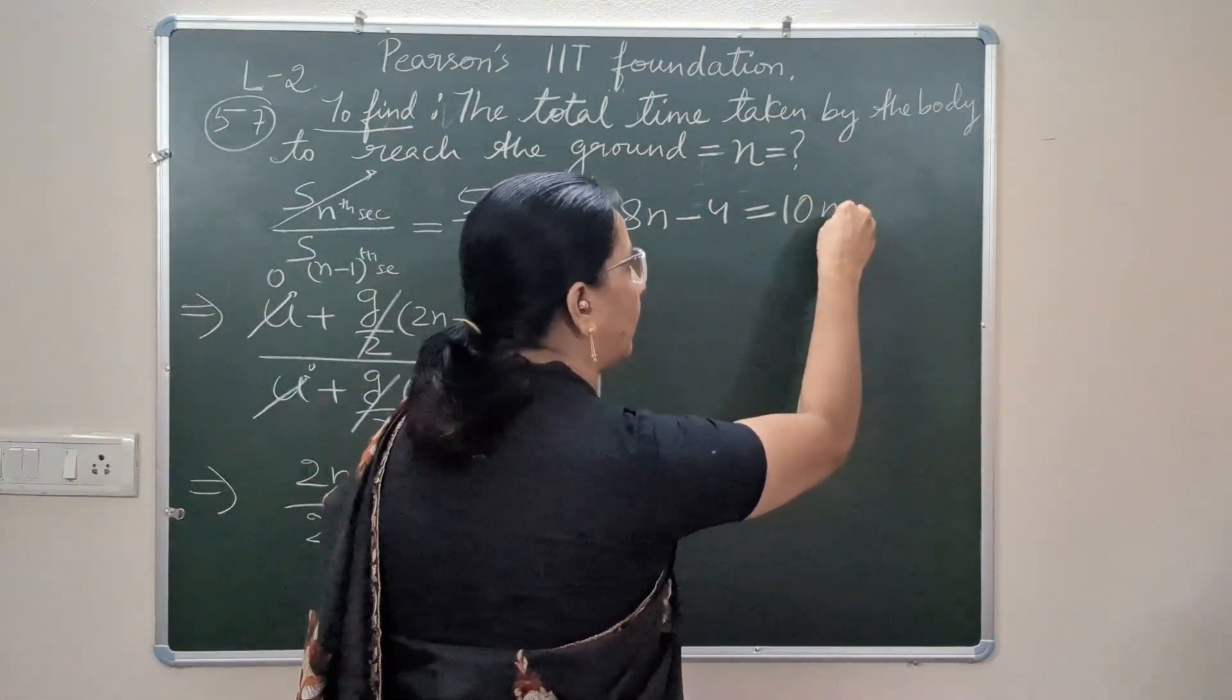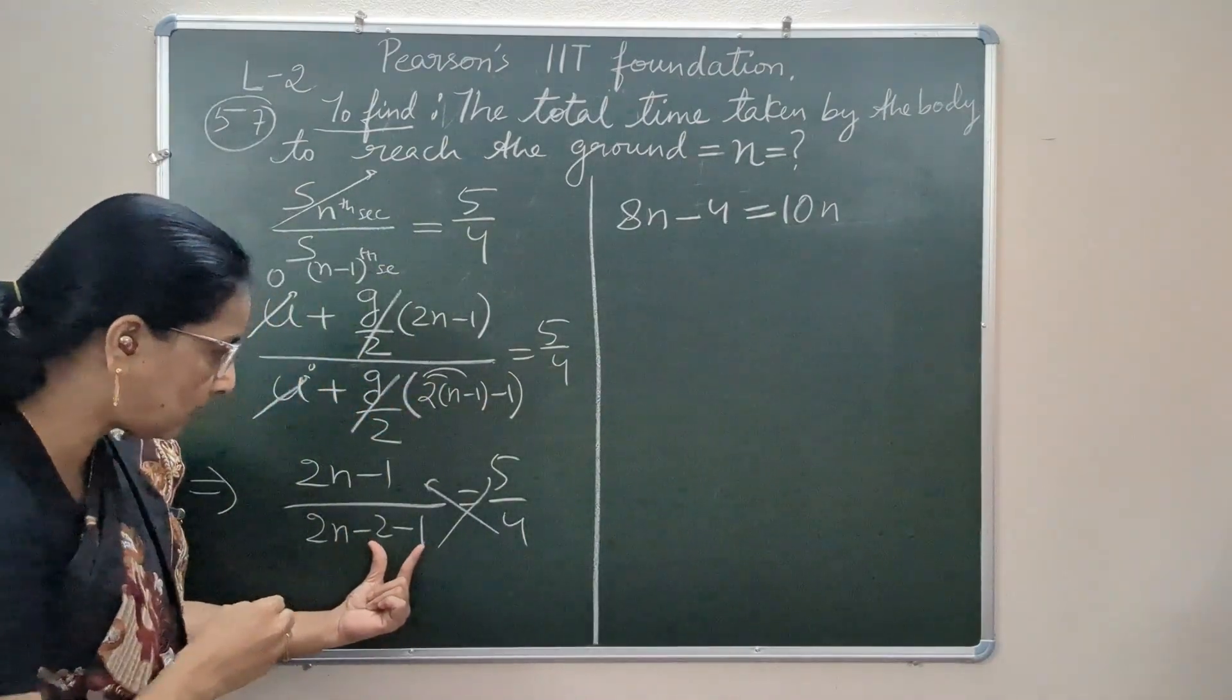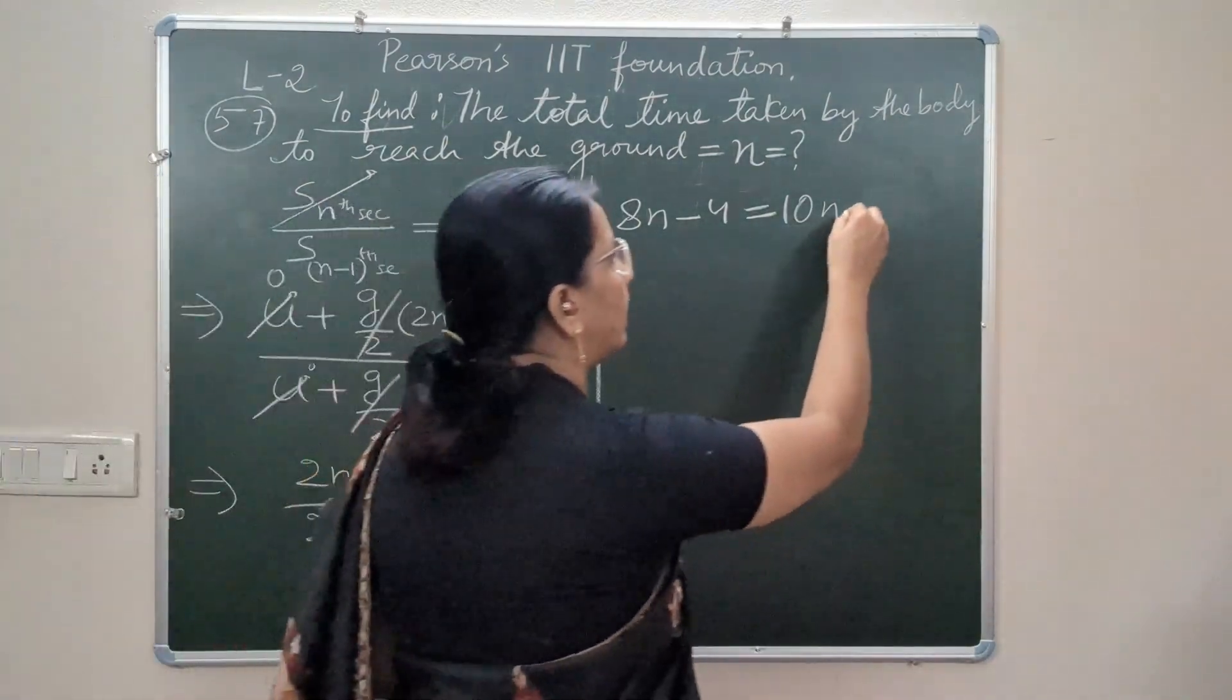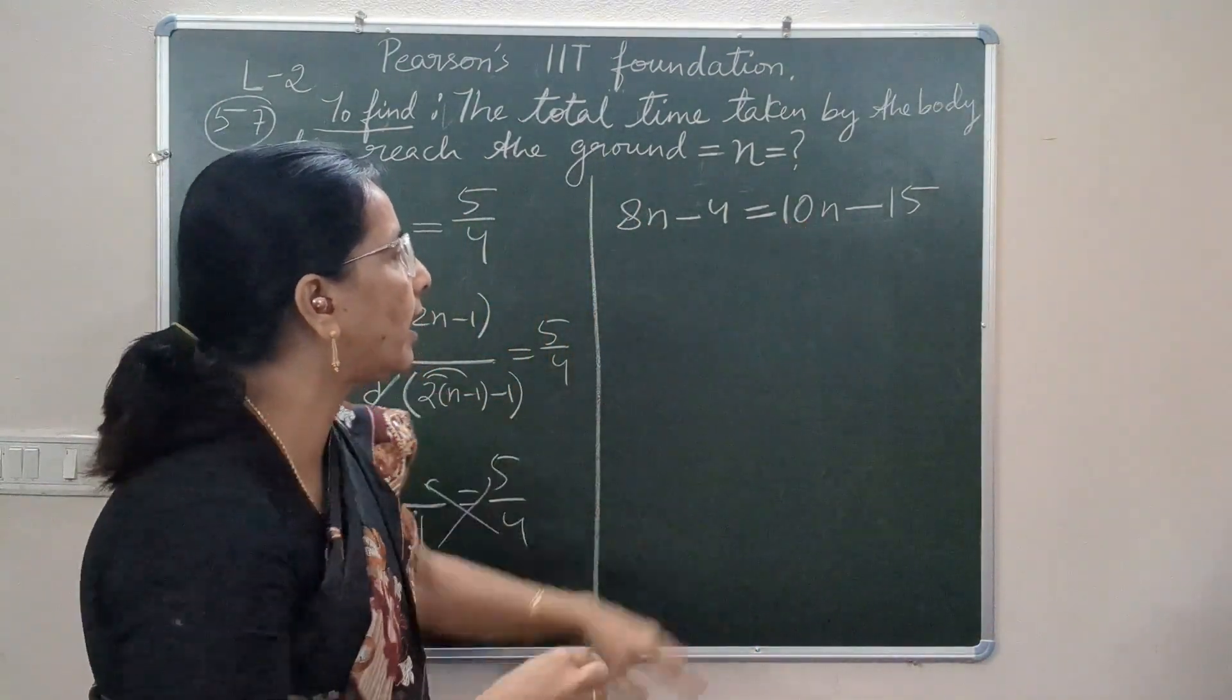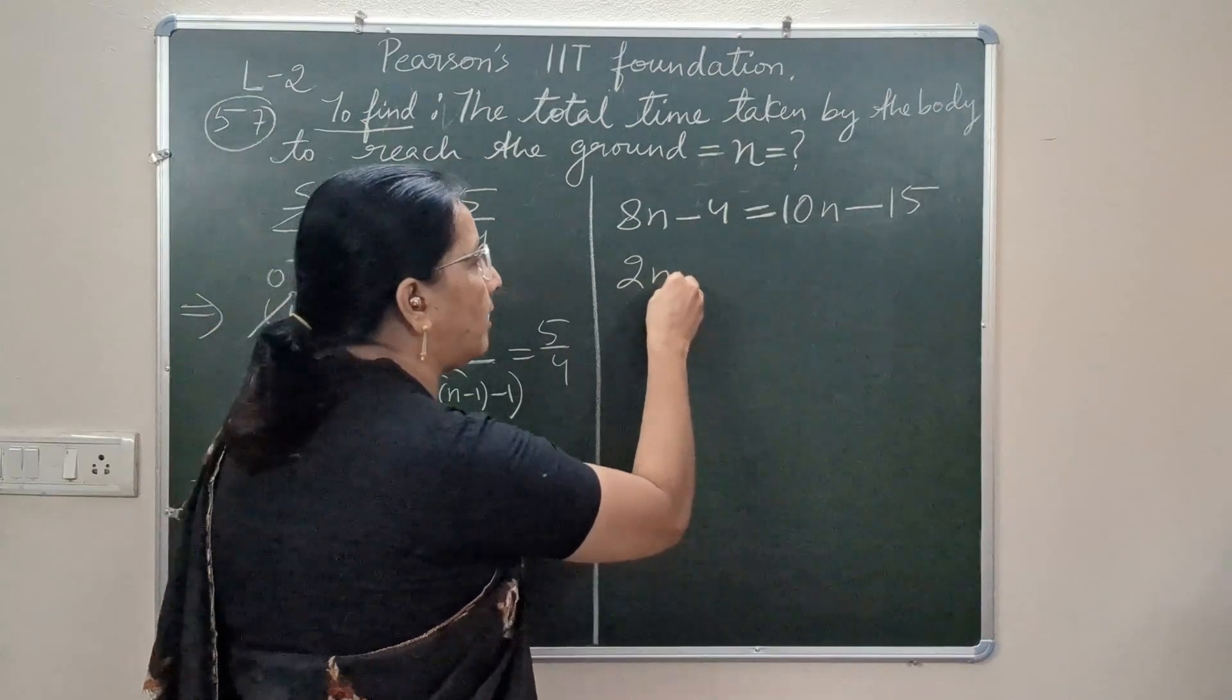On the other side 5 times 2n is 10n minus 3, so 5 times minus 3 is minus 15. Then we will put like terms together, so 10n minus 8n is 2n, and 15 minus 4 is 11.